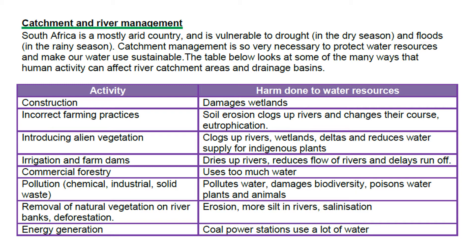Incorrect farming practices lead to soil erosion that clogs up the rivers, and siltation in the dams as well, and then eutrophication — that's a word we're going to look at just now.